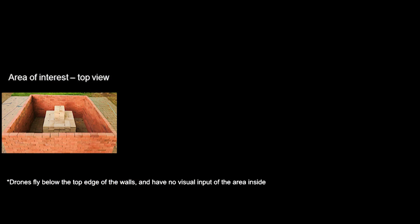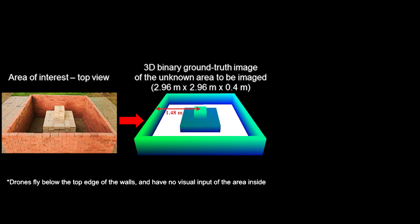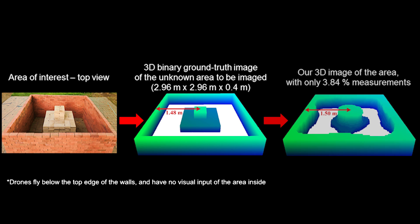Here's the top view of the unknown area of interest and here is a 3D binary ground-truth image of it. The right figure then shows how our two copters image the area with only Wi-Fi. As can be seen, the copters have successfully imaged this area in 3D. We can see that the empty and occupied spaces are imaged well.